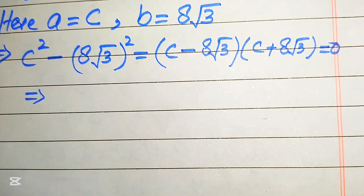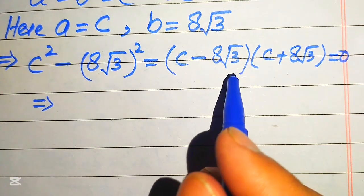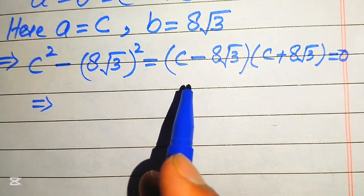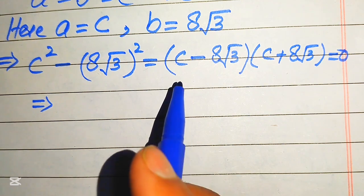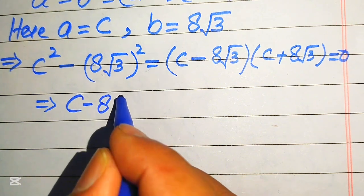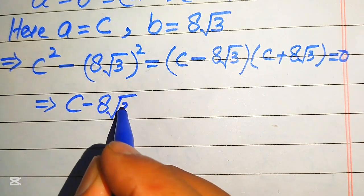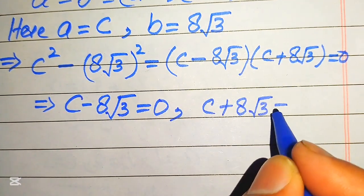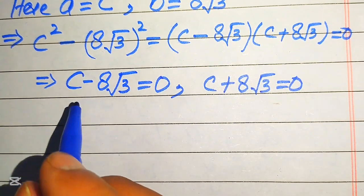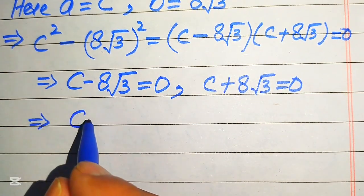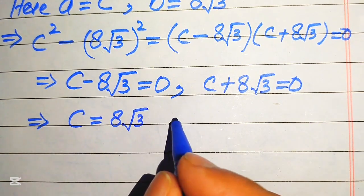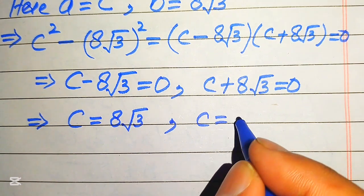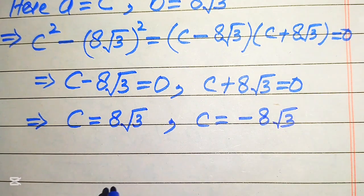Since the two factors are multiplied together and equal 0, we apply the zero product rule. Setting each factor equal to zero separately: c minus 8 times square root of 3 equals 0, and c plus 8 times square root of 3 equals 0. From the first case, c equals 8 times square root of 3, and from the second case, c equals minus 8 times square root of 3.